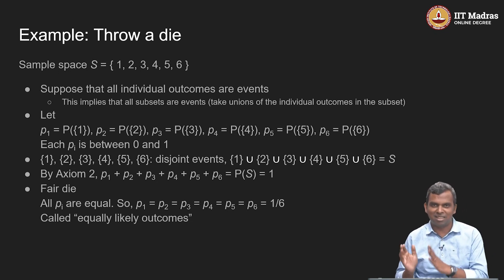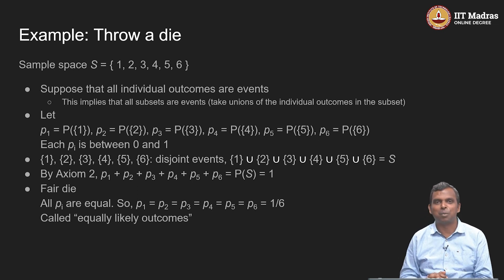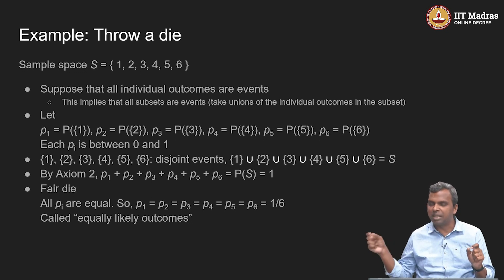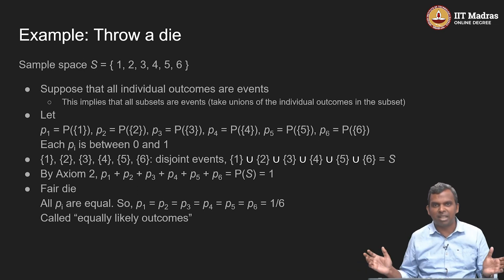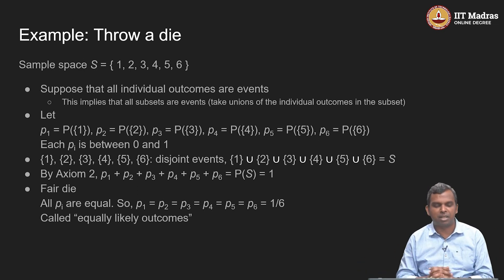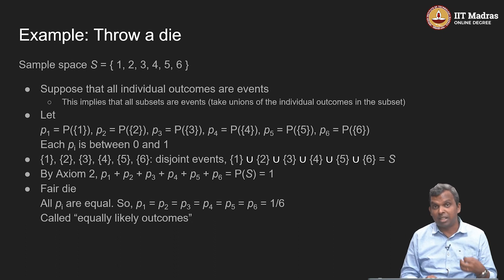1 is an event, 2 is an event, 3 is an event — we know that is already true. Once you have all the individual outcomes as events, you can take unions and whatever else, and then that makes every subset an event. So that is the sample space we are dealing with here.